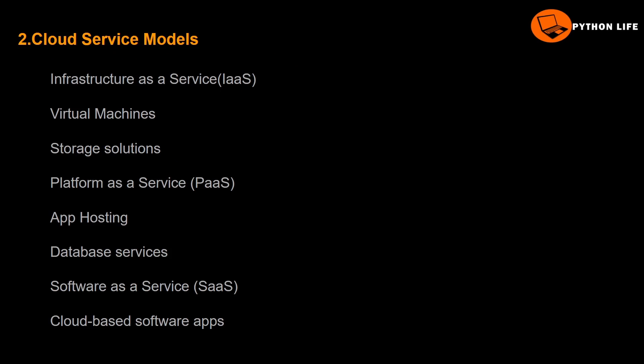Next: Cloud Services — Cloud Service Models. What are they? IaaS, PaaS, SaaS. Infrastructure as a Service, Platform as a Service, Software as a Service. These three are the main important models. They cover Virtual Machines, Storage Solutions, Database Services, and App Hosting. You have these three Cloud Service Models to understand.